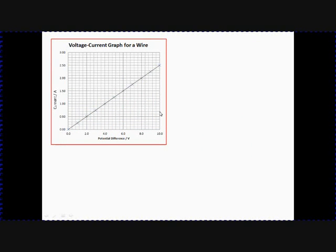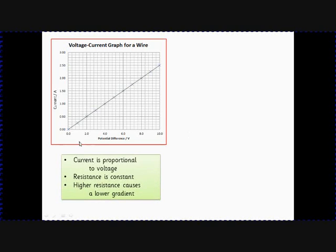So here's our voltage current graph for a wire - voltage on this axis, current on this axis. Proportional relationship, the resistance is constant. And if the resistance was higher, another line on the same graph with a higher resistance, we'd get less current for the same PD. So the gradient of the graph here would be lower. So the higher the resistance, the lower the gradient of the graph.